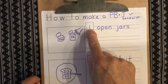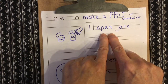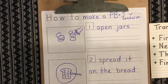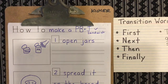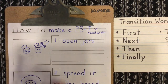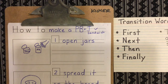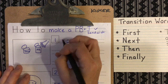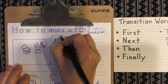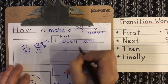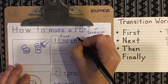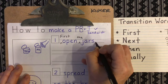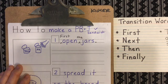Okay, I see step one — open jars. Oh wait, what transition word could I use? How about 'first'! And also I didn't start with a capital and I didn't end with a period. So I'm going to put a little caret, capital F — 'First open the jars, period.' First open the jars — okay, that sounds good.